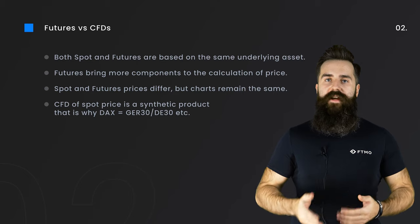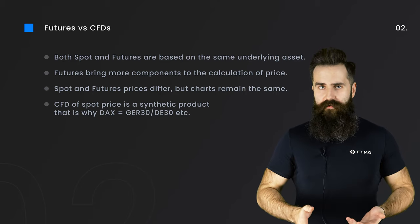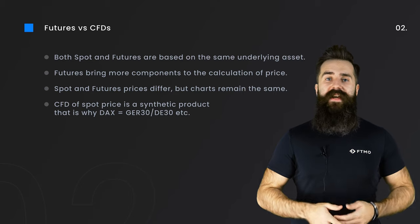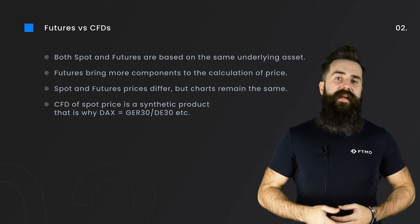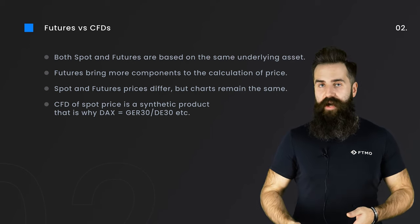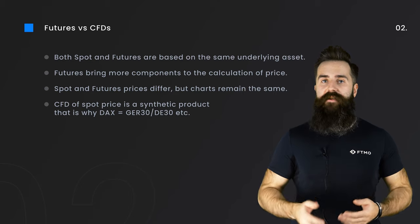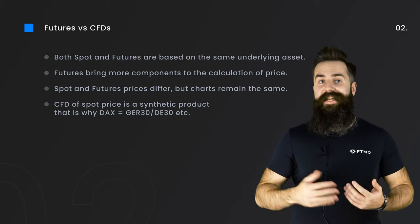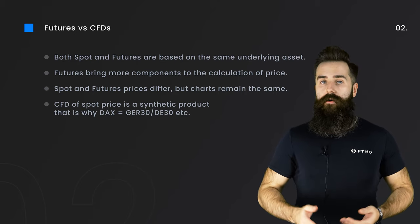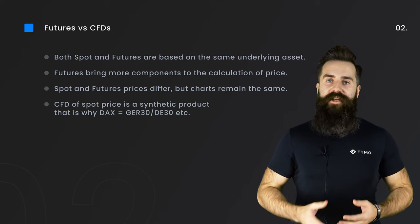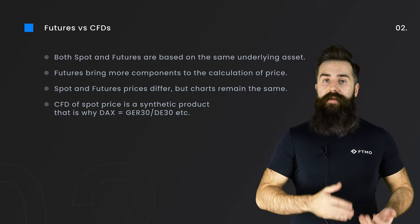If you take a look at your trading platform, you might think that the CFD you see there is based on the index price itself, but this is not true. Because the index price updates every few seconds, the cash CFD in your trading platform is based upon the real-time updated futures contract that has been adjusted to reflect the current cash price. The CFD of this cash market is a synthetic product. That is why you won't find DAX in your platform, but rather GER30 or DE30. This is the same for other products such as NASDAQ, which is called USTEC or US100. Although prices of cash and futures contracts are different, the chart remains absolutely the same, as they both track the same underlying asset.